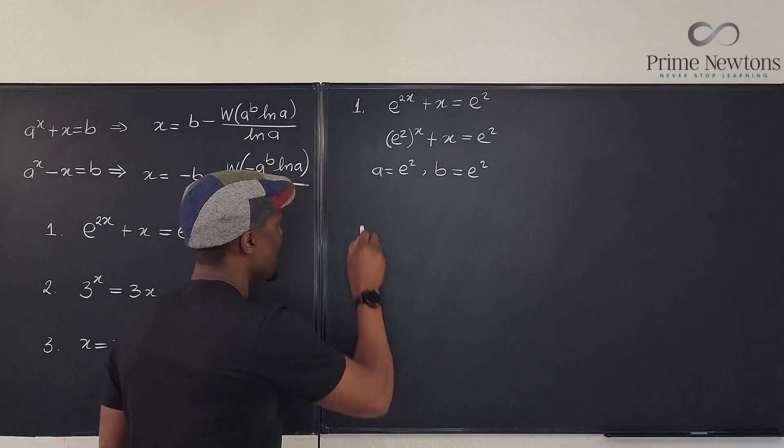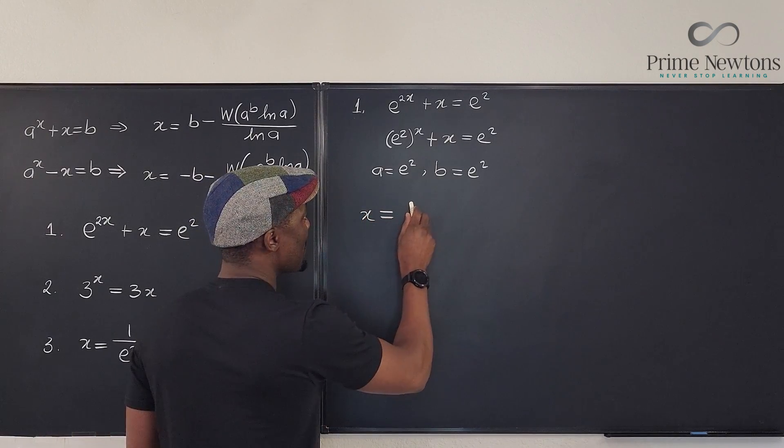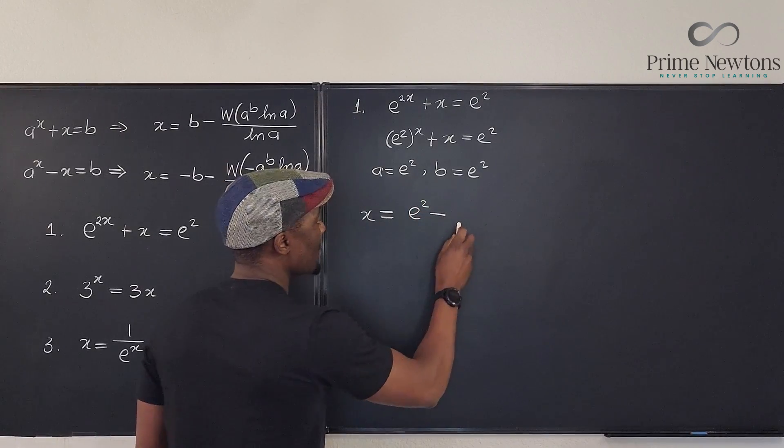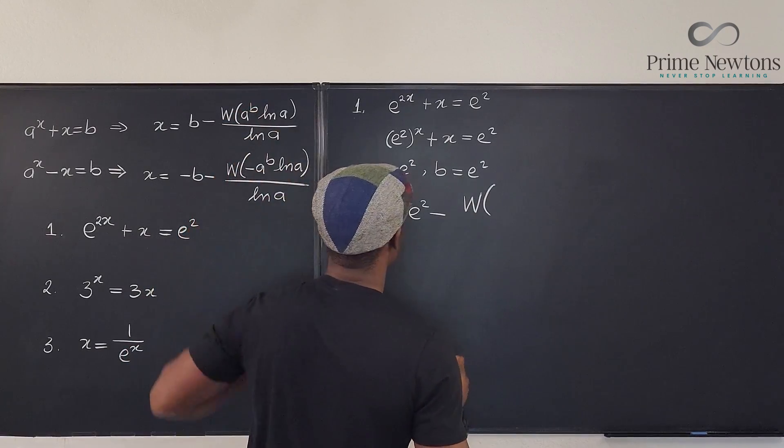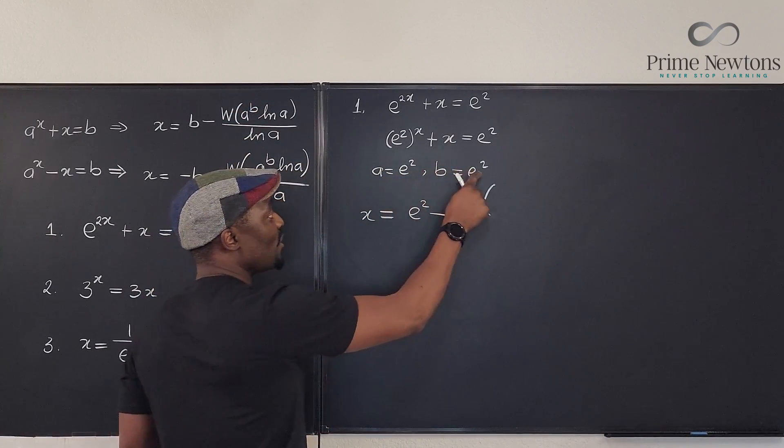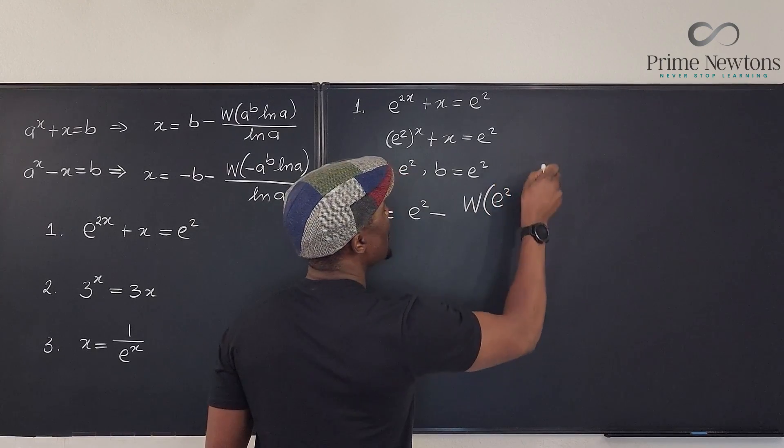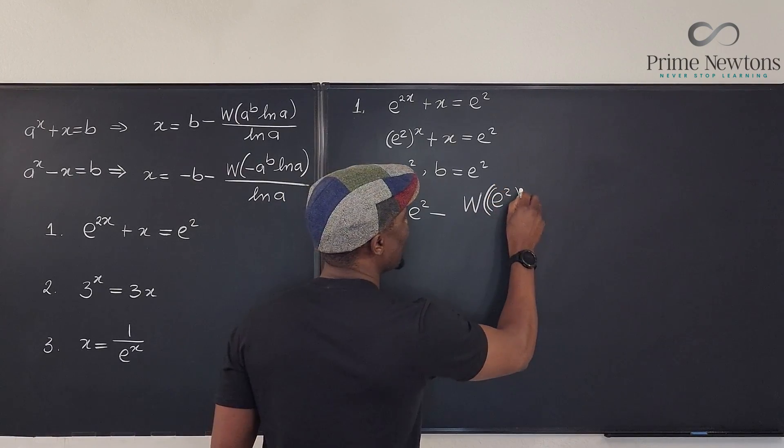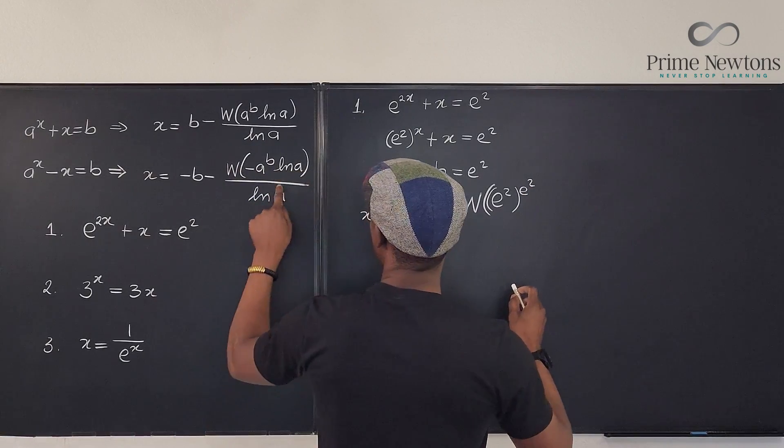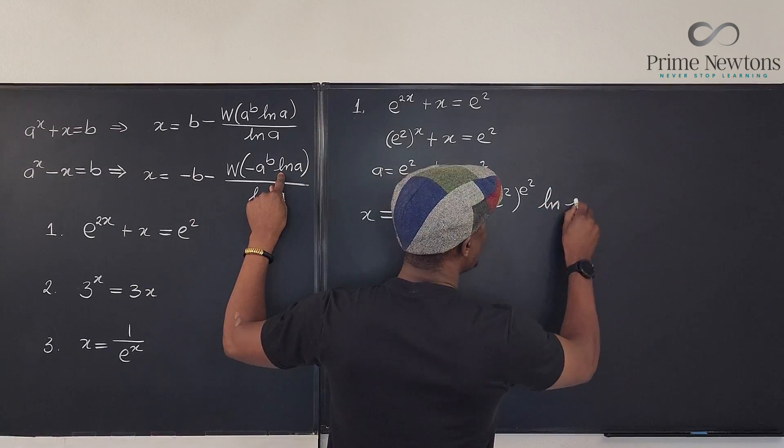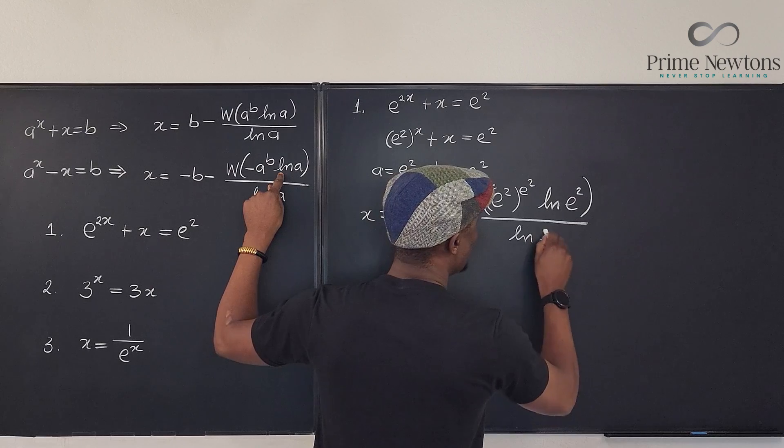So, what's the answer? Well, our answer x is equal to b, which is e squared minus a raised to power b. This raised to power this. That's going to be e squared raised to power e squared. Let me write it this way. You see that? And multiplied by the natural log of e squared, all divided by the natural log of e squared.